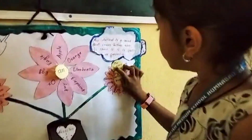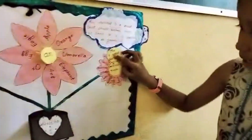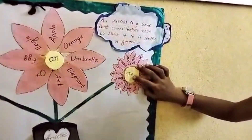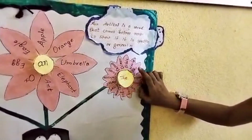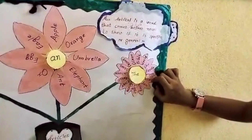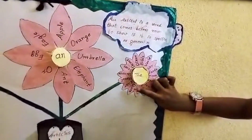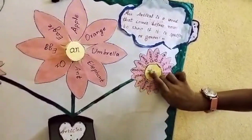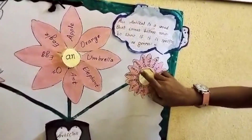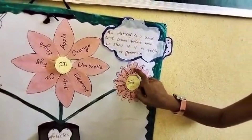When do we use The? The is used before a particular noun. Example: the world, the sky, the earth, the moon, the west, the sun, the king, the light, the queen, the river, the forest, the universe, the star, the desert, the ocean, the people.